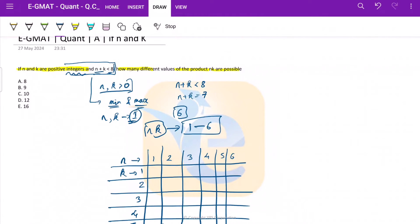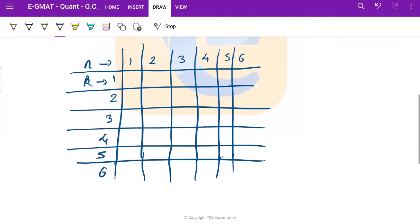So with that done, let us see how many different values of the product n k are possible. So what all products would we be getting: 1, 4, 9, 16, 25, 36.